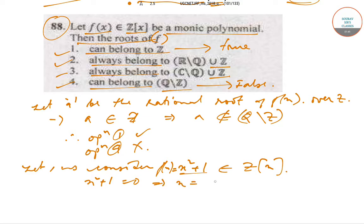This implies that x = ±i. So as you can see, x = ±i does not belong to (R\Q)∪Z. Therefore, we can definitely say that option 2 is wrong.